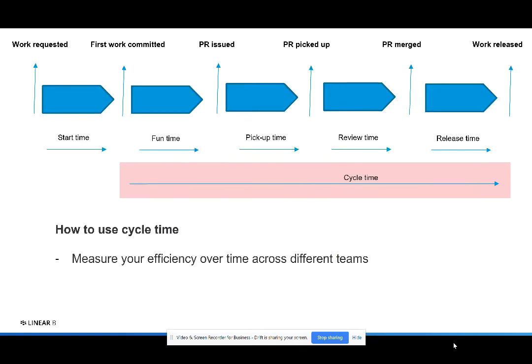So how do we use cycle time? If you look at cycle time over each of your teams and over each of your iterations, you'll start to get a sense for your efficiency and your trending over time. More importantly, by measuring each phase of cycle time, you'll identify bottlenecks in your delivery and ways that you can fix those.